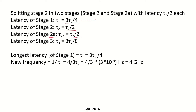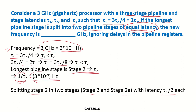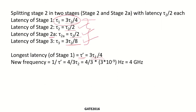The latency of stage 2 is τ2/2, of stage 2a is also τ2/2, and the latency of stage 3 computed earlier is 3τ2/8. Comparing all these latencies, we see that the longest latency is now stage 1, which is greater than stage 2, stage 2a, and stage 3. Let us call it τ_dash = 3τ2/4. The new frequency will be 1/τ_dash.